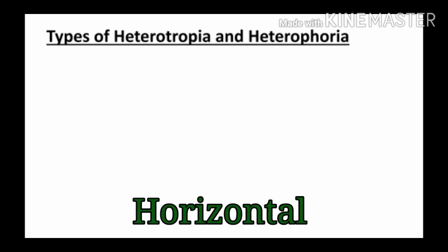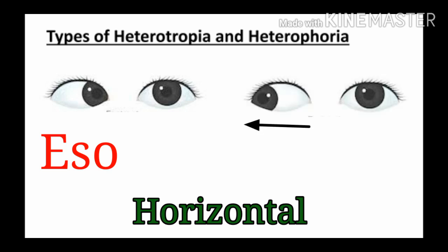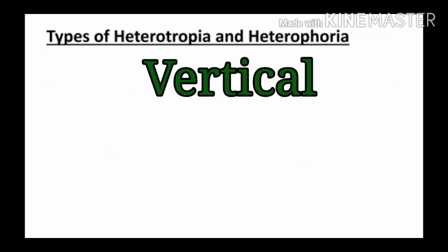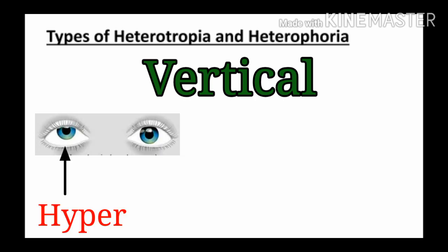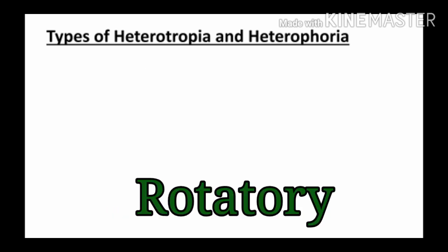Eso- and exo-deviations come under horizontal deviation. If the eyes are deviated nasally, the condition is eso-deviation: if manifest it is called esotropia, and if confirmed after the cover test it is called esophoria. If the eyes are deviated temporally, the condition is exo-deviation: if manifest it is called exotropia, and if confirmed after the cover test it is called exophoria. Hyper- and hypo-deviations come under vertical deviation: upward deviation is hypertropia (manifest) or hyperphoria (latent); downward deviation is hypotropia (manifest) or hypophoria (latent).